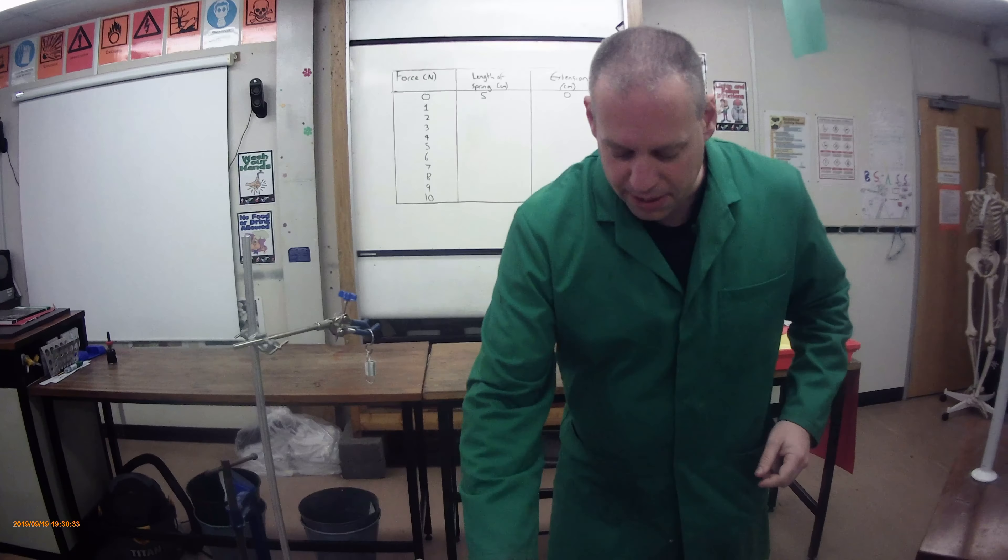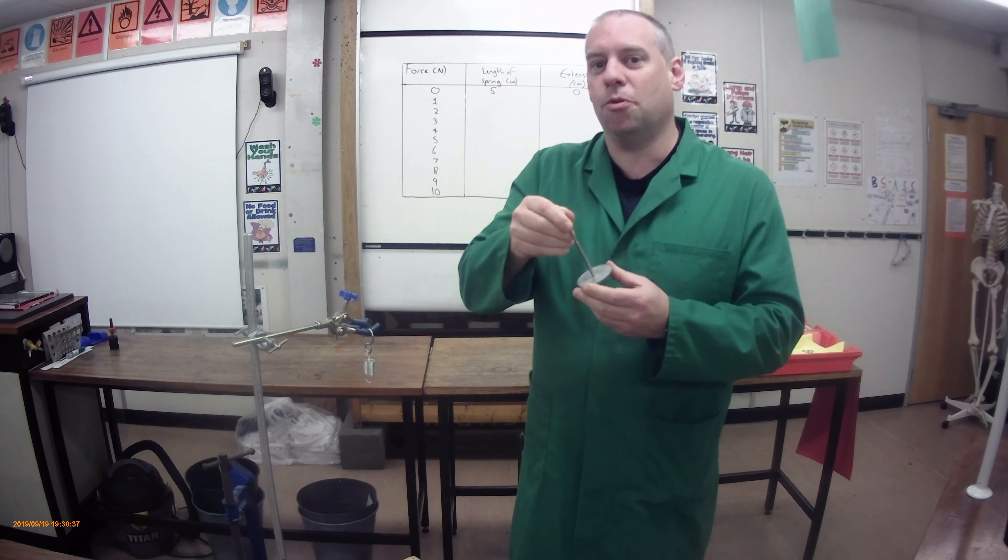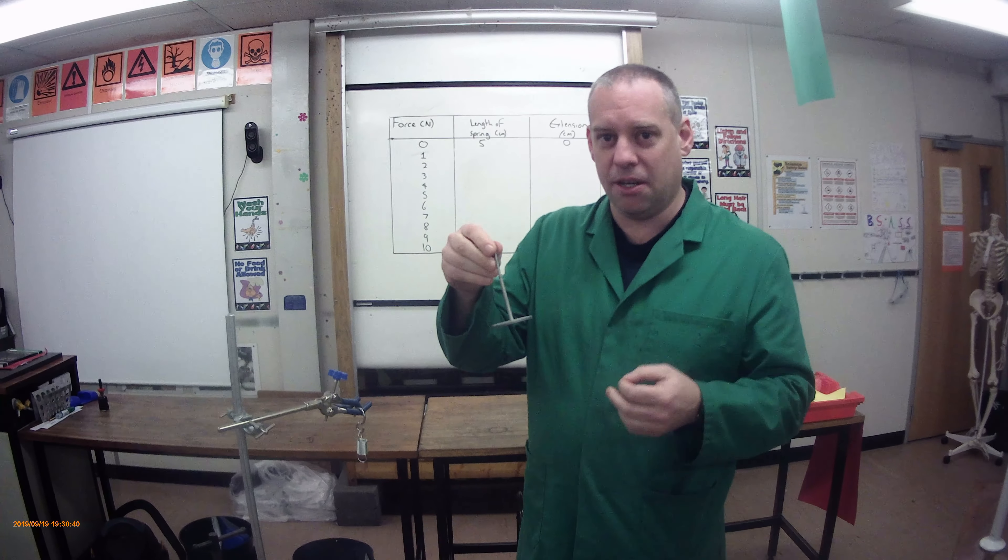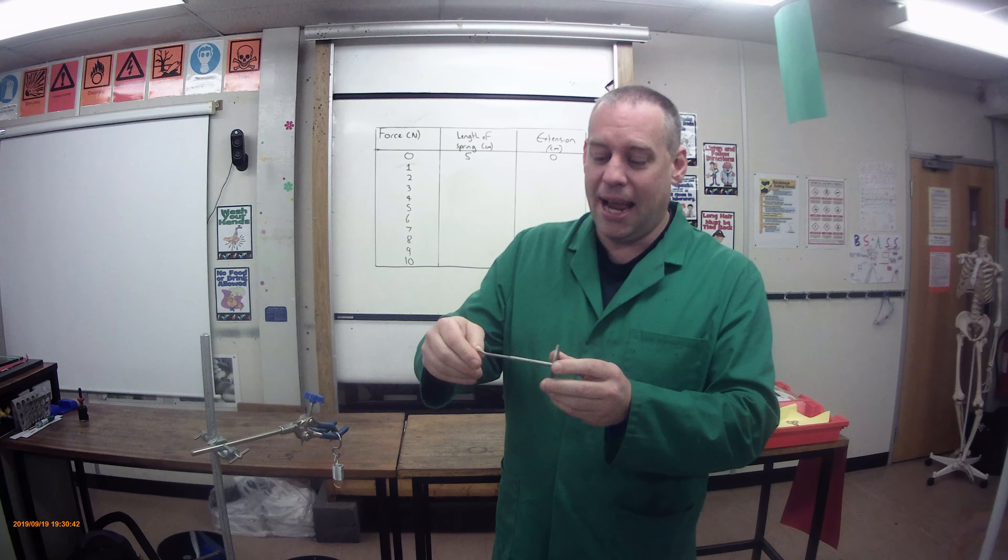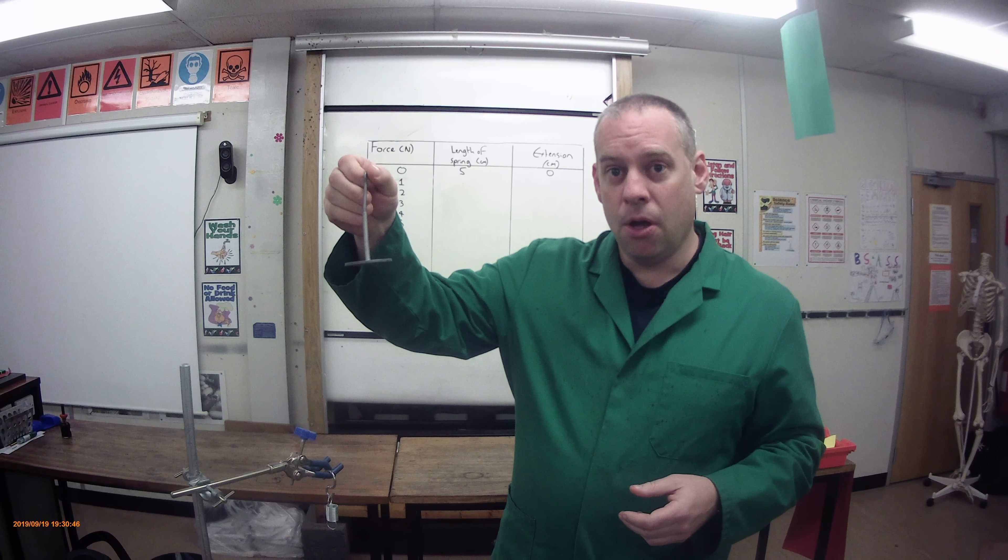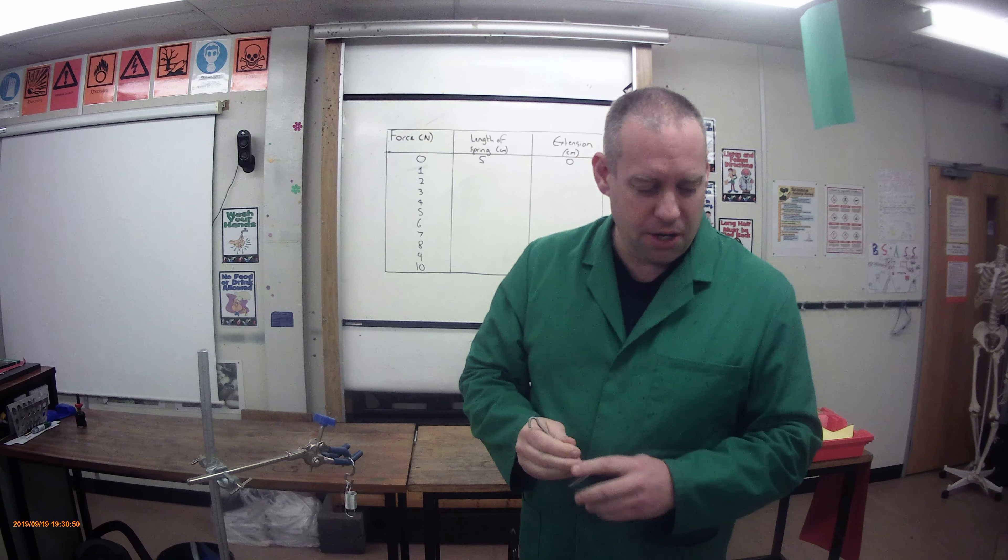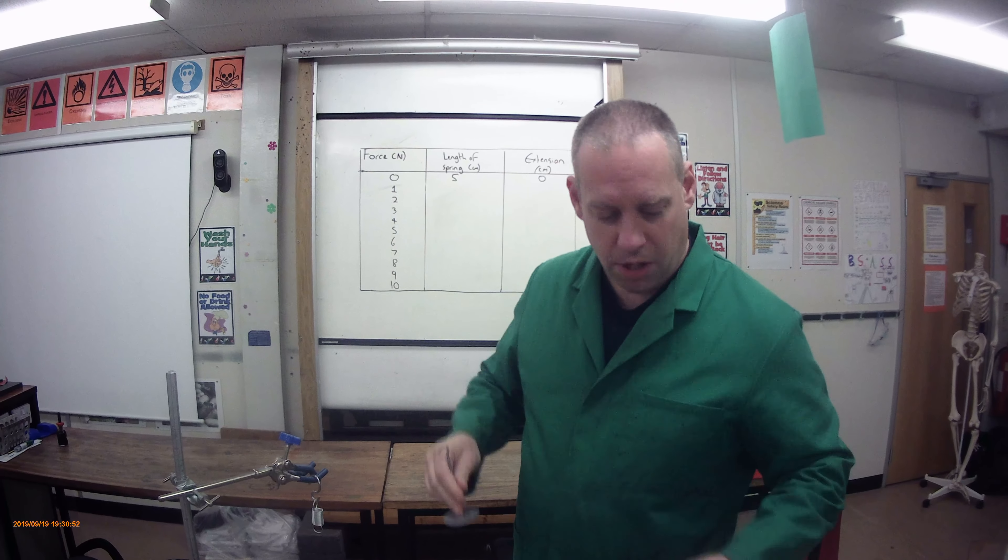Now I should really quickly say about this, these are 100 gram masses. 100 gram masses are useful because they are a force of one newton in gravity because the Earth's gravitational pull is approximately 10 newtons per kilogram, which means 100 grams equals one newton. So each of these is going to represent one newton.